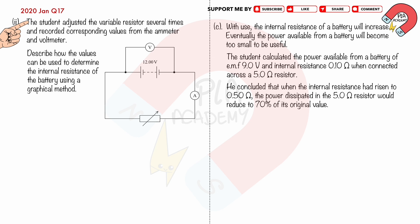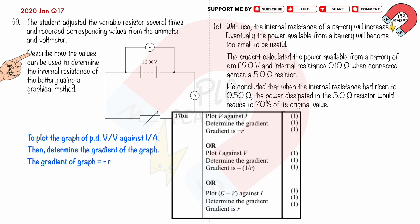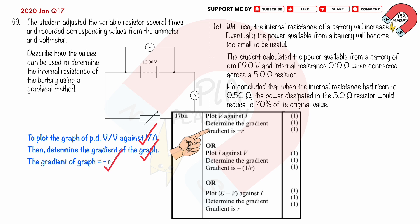Part B2: The student adjusted the variable resistor several times and recorded corresponding values from the ammeter and voltmeter. Describe how these values can be used to determine the internal resistance using a graphical method. Plot the graph of PD V against current I, then determine the gradient of the graph. The gradient of the graph is equal to negative r. You will get three marks for: plotting PD V against I, determining the gradient of the graph, and stating that the gradient equals negative r.